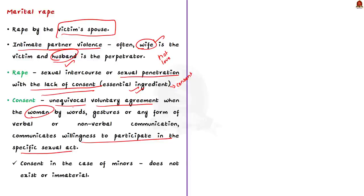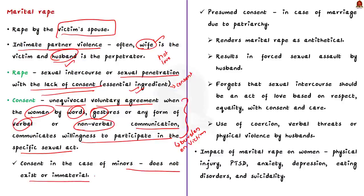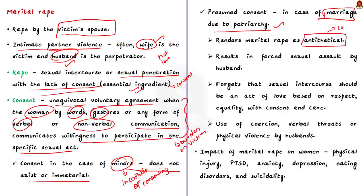Such communication could be by words, gestures, or any form of verbal or non-verbal communication. The burden to prove the lack of consent often rests on the victim. In the case of minors — children under the age of 18 — it is presumed that consent does not exist, as children are incapable by law of consenting to sexual acts. However, there are instances where consent is presumed to exist — this presumption exists when the victim and perpetrator are married, a result of patriarchy. Therefore, in countries like India, the idea of marital rape is seen as antithetical to presumed consent.